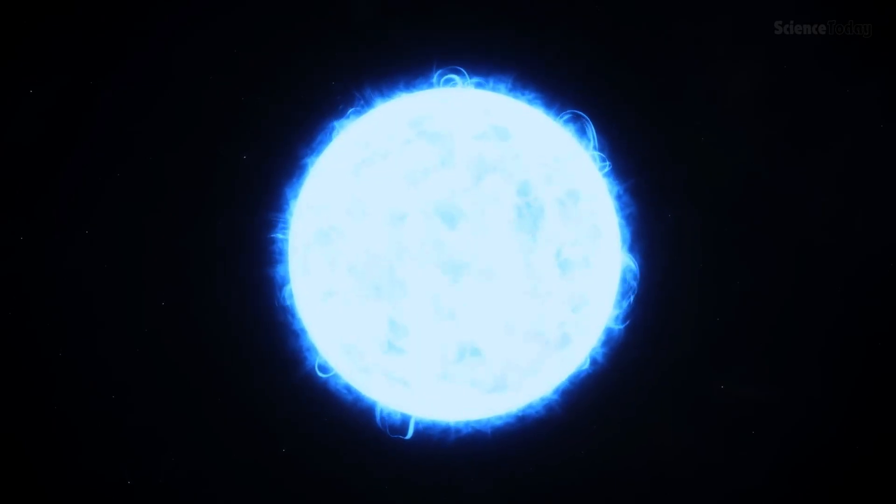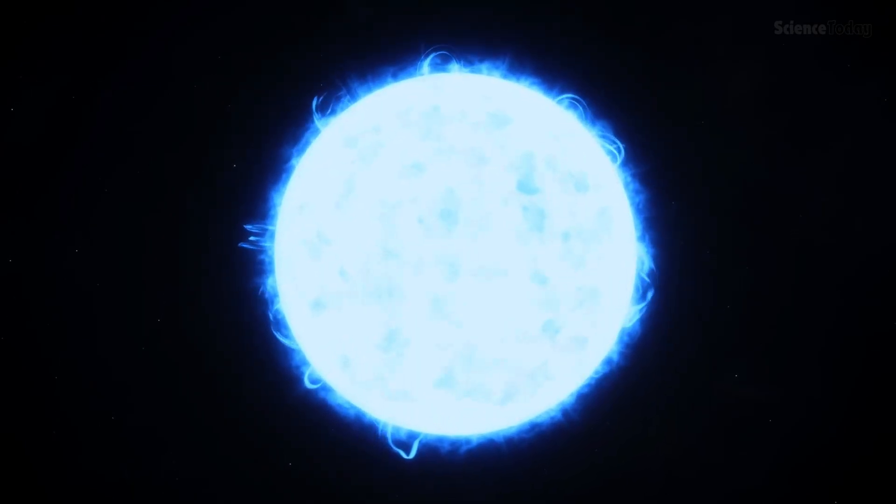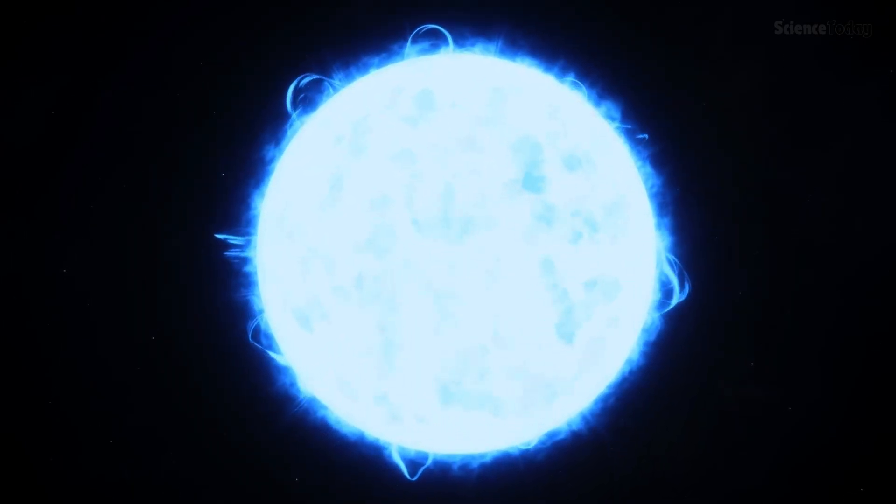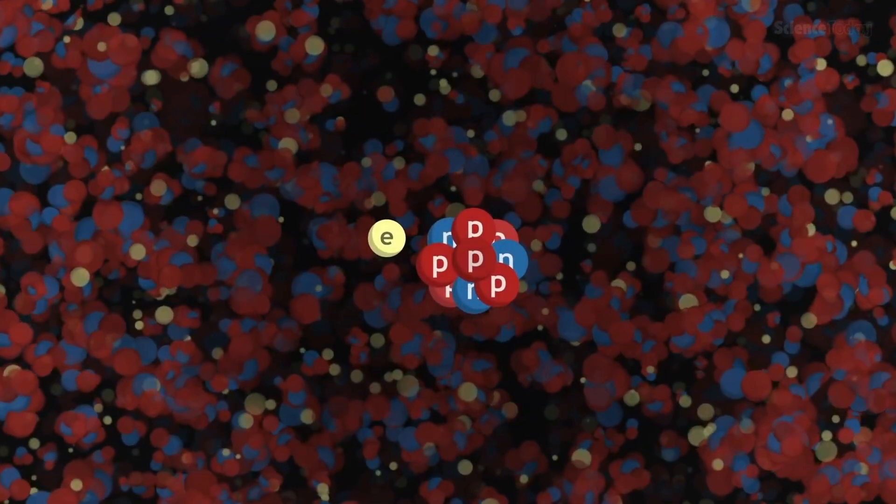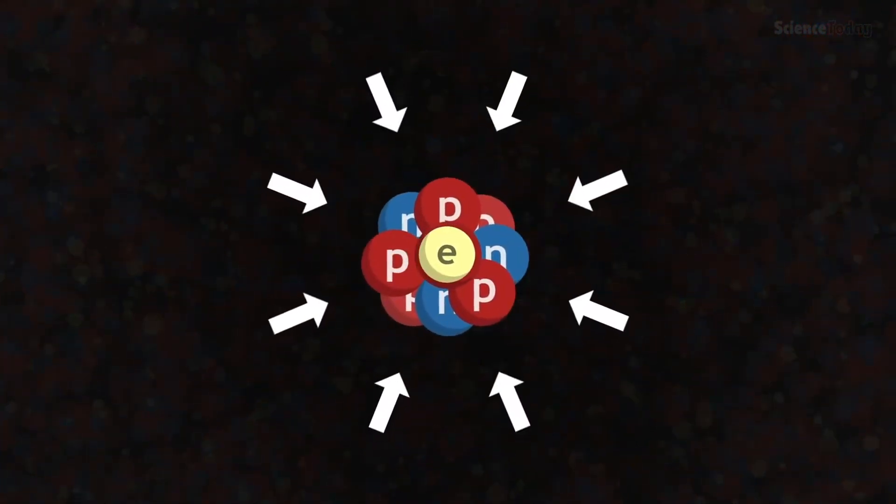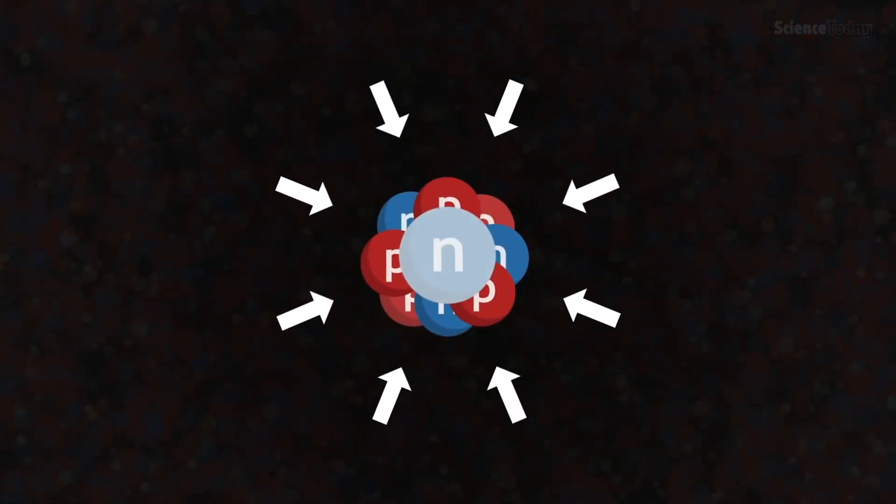Neutron stars are held together by a delicate balance. At their cores, matter is squeezed to such extreme densities that atomic nuclei dissolve. Electrons and protons combine into neutrons, forming a bizarre state of matter called neutronium.